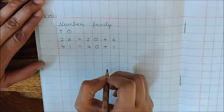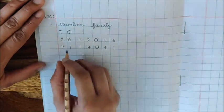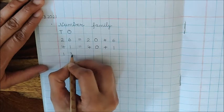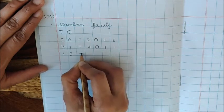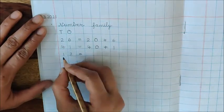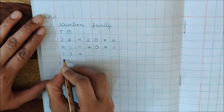4 tens and 1 ones is number 41. Now write the next number. 13. You have to write the expanded form of 13. 13 is. Then write 50.